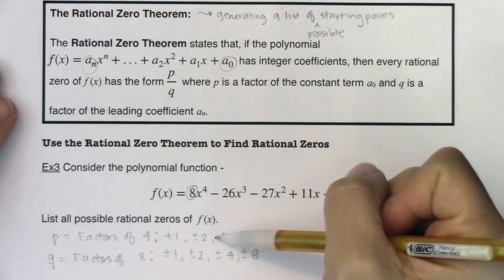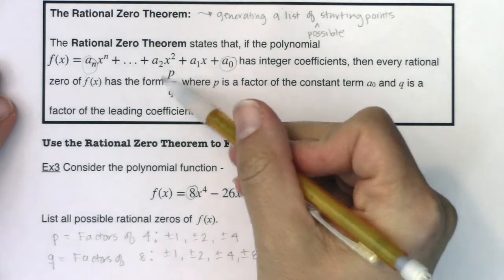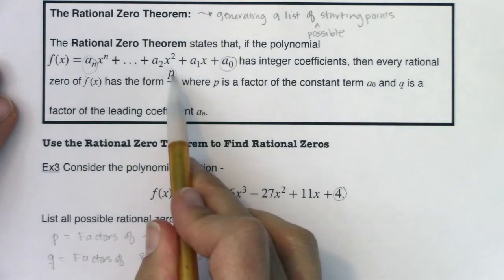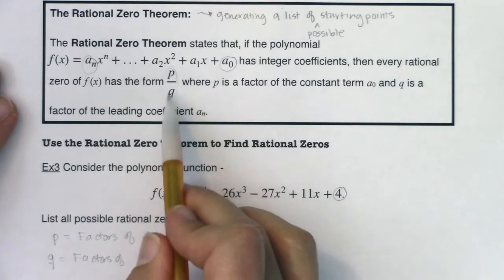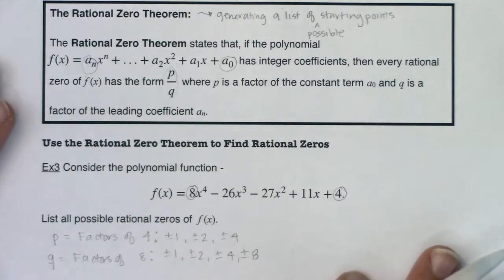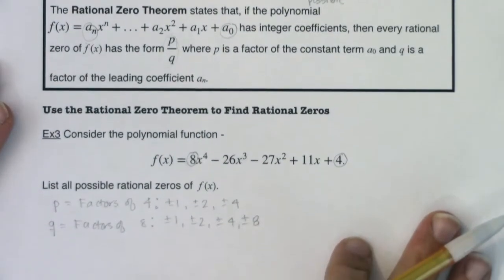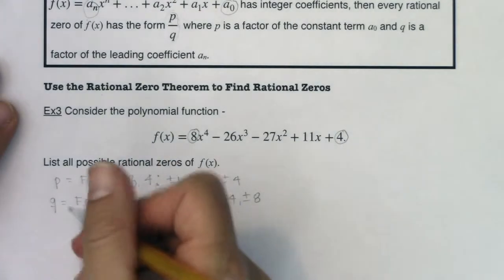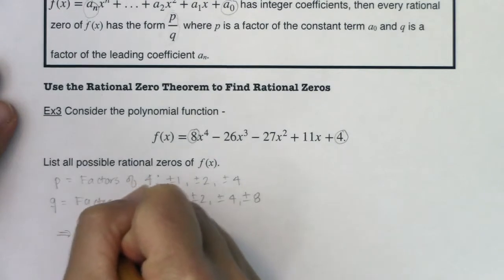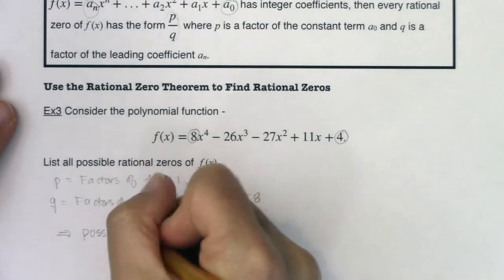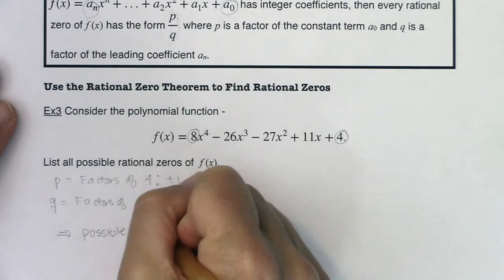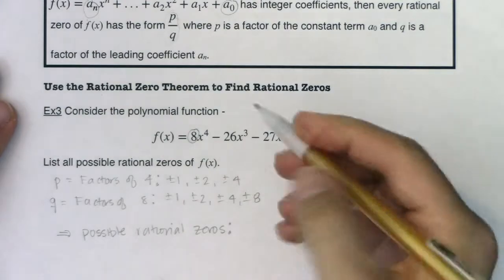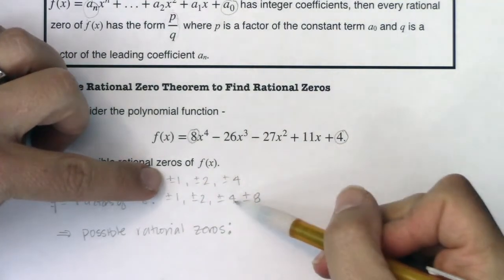Once you've generated your list of p's and q's, put them as ratios. That's why it's called the rational zero theorem. We're going to create fractions. So I'm going to take every p and put it in ratio to every q and create that list. So I'm going to scooch this up so that we can see my list get generated. All right. So once I have that, here we go, this is my possible rational zeros. And I'm going to try and be methodical about this. So I'm going to take every p and divide it by every q.